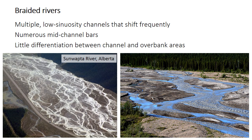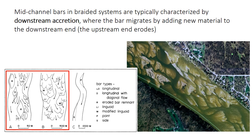Braided rivers get their name from the multiple intertwined channels that resemble braided hair or rope. The individual braids have low sinuosity, meaning they're relatively straight, and they're separated by mid-channel bars. These raised bars are exposed when water level is low, but submerged when the river has high water flow. The braid channels shift position frequently, so there isn't a clear differentiation between the channel and the overbank, and therefore the sediment in the channel is pretty similar to the sediment that makes up the bars. These bars typically move in a process called downstream accretion, where the upstream end of the bar is eroded and that sediment is deposited at the downstream side, moving the bar further down the channel.